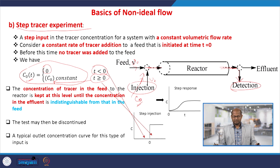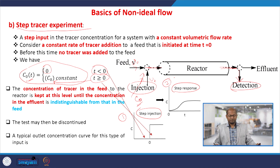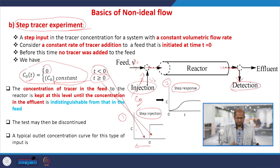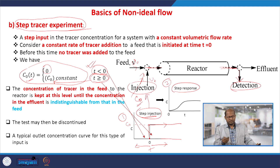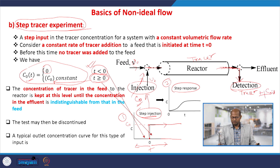Here the step injection and step response: the first step is the step injection and the second is the step response. In the step tracer experiment, initially for t < 0 the tracer concentration is 0. Once t ≥ 0, the tracer input suddenly jumps to a particular concentration C_0, which we inject throughout the reactor — that is the maximum concentration. Once the tracer spends some time inside the reactor it comes out, and at different times we can measure the output tracer concentration C_out.